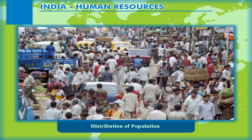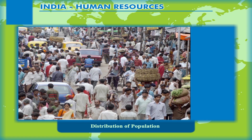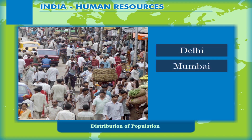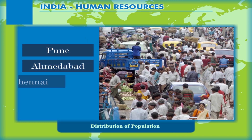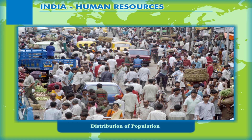Even though the uses of natural resources like land and water in these regions have shown signs of degradation, the concentration of population remains high because of an early history of human settlement and development of transport network. On the other hand, the urban regions of Delhi, Mumbai, Kolkata, Bangalore, Pune, Ahmedabad, Chennai and Jaipur have high concentration of population due to industrial development and urbanization, drawing large numbers of rural-urban migrants.